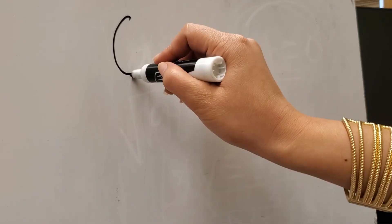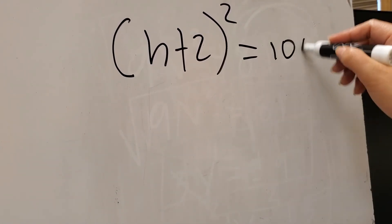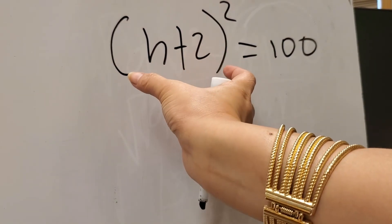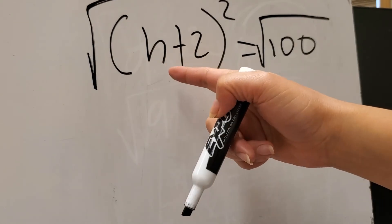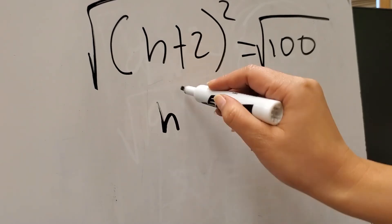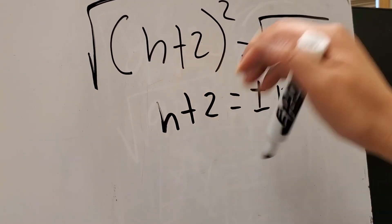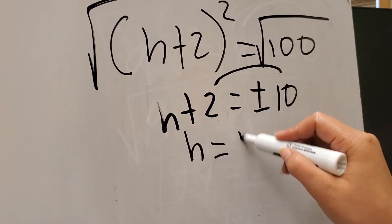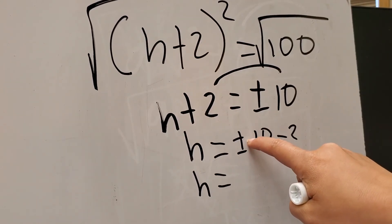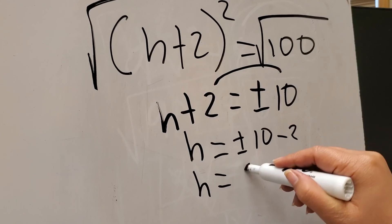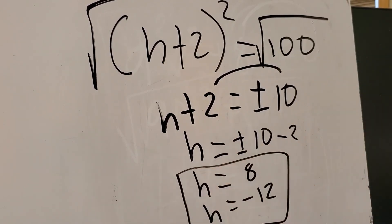What if you have the equation where the quantity h plus 2, squared, is equal to 100? The whole two terms are squared, so we can directly get the square root of both sides. The square root of the quantity h plus 2 squared becomes h plus 2, and that is equal to positive and negative 10. Since we're looking for h, we transpose 2 to the other side. So h equals positive and negative 10 minus 2. From positive 10 minus 2, that gives you 8. And from negative 10 minus 2, that gives you negative 12. So these are the two values of h for that equation.